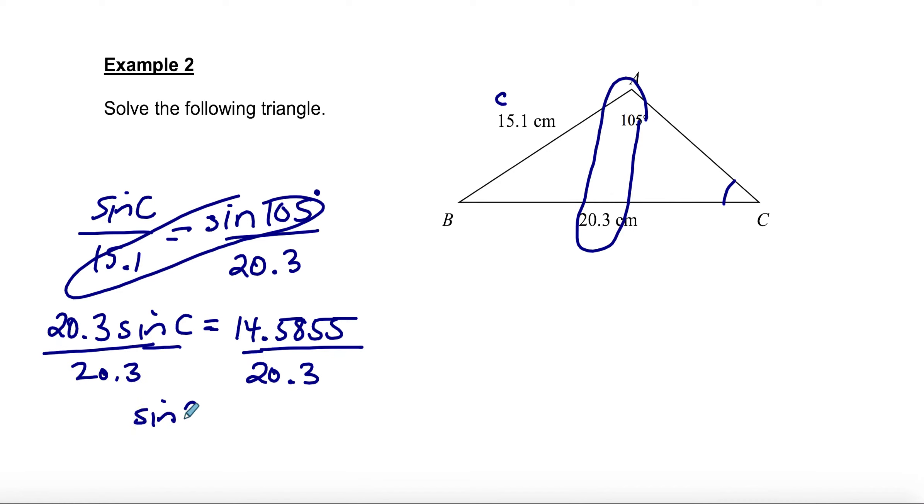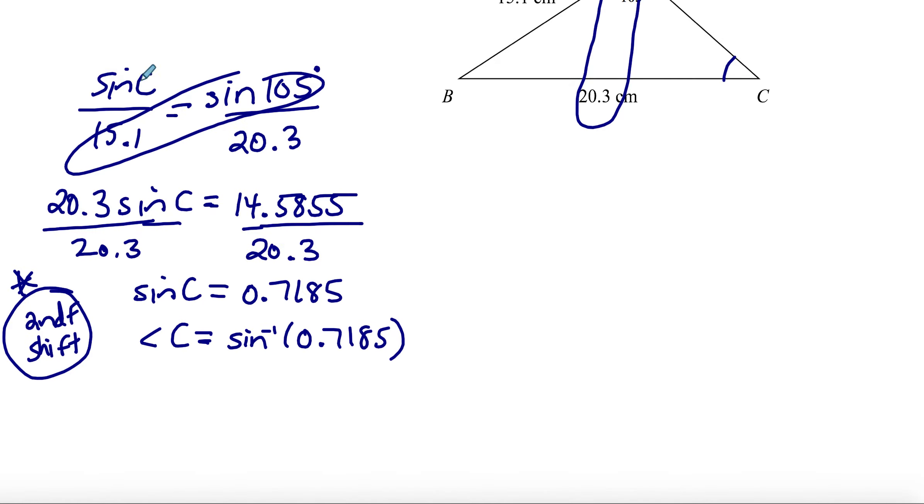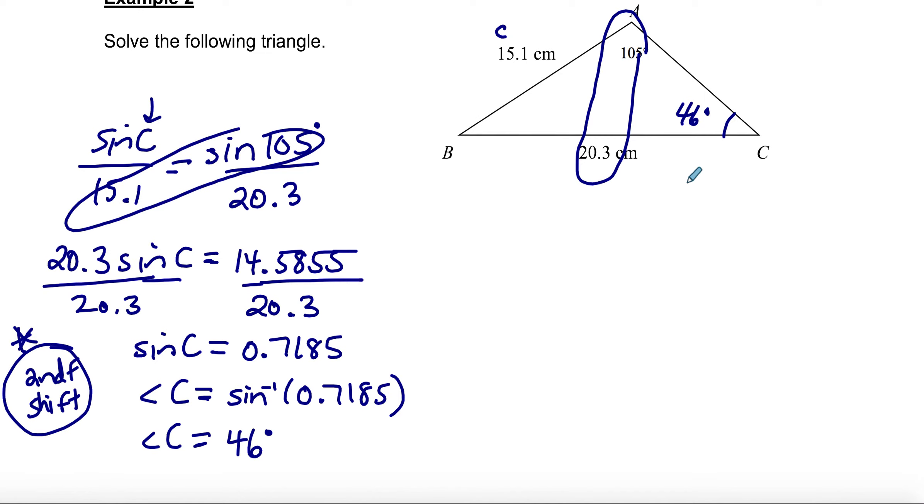I can divide both sides by 20.3. Some students get stuck here. I have sine C equals, and I can divide those numbers, I get 0.7185. To find angle C, I'm going to have to do the inverse sine of 0.7185. Remember, I'm pushing second function or shift on my calculator. Anytime you're looking for an angle, you're going to have to push second function or shift on your calculator. We were looking for an angle right off the bat, so eventually you're going to have to do second function or shift. Angle C we're able to find is 46 degrees.